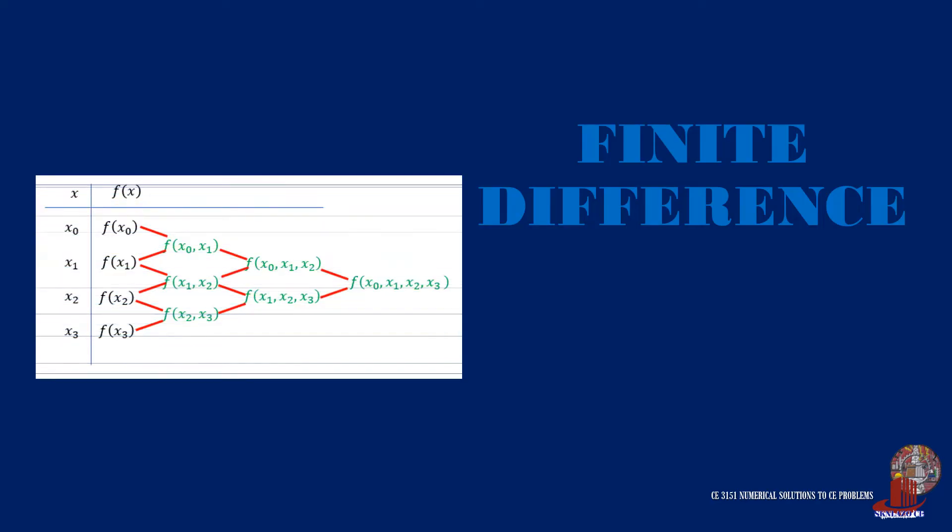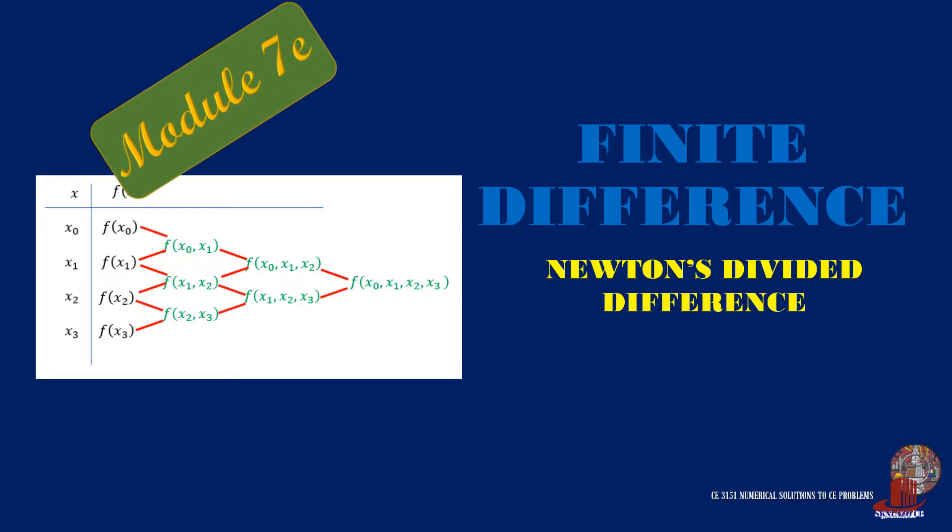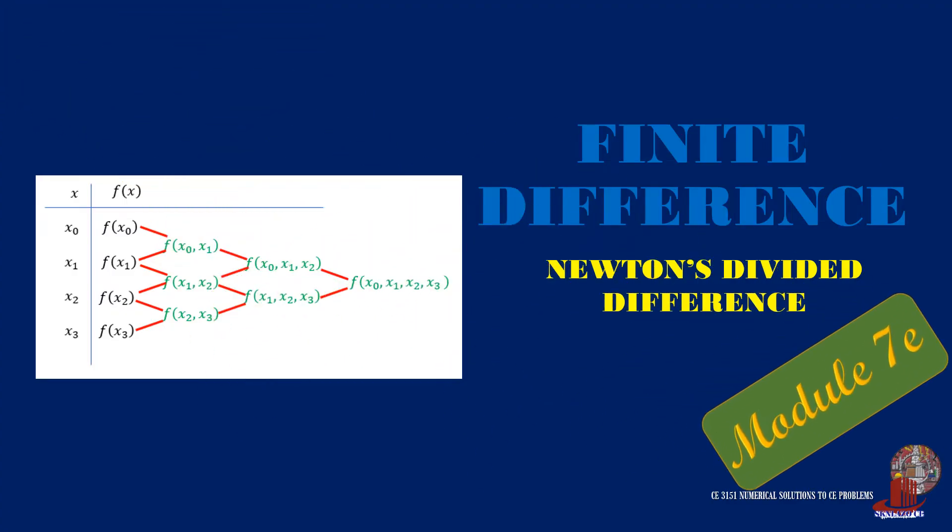In cases where interpolation is required for a dataset with irregular x-intervals, there are appropriate methods for identifying values. Newton's divided difference is one of those which uses a divided difference table. Learn more about it here in Numerical Solutions to CE Problems.